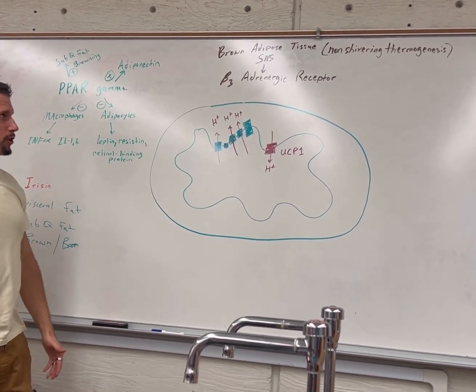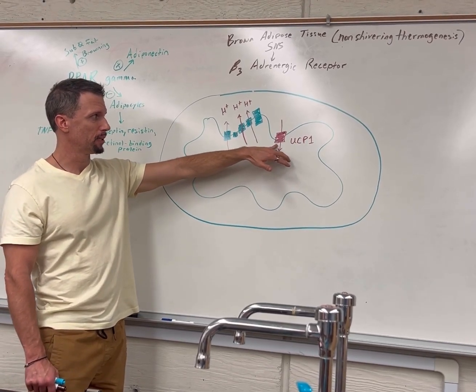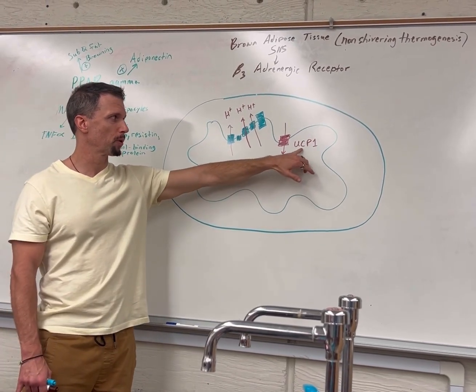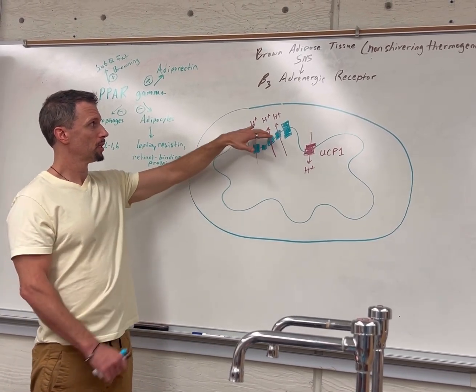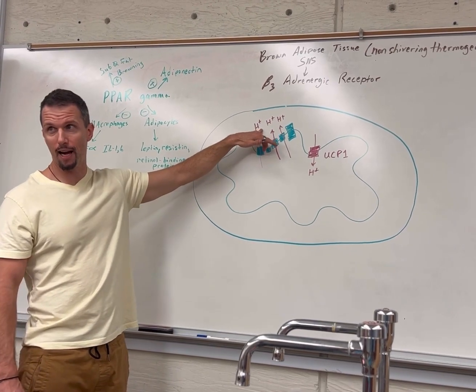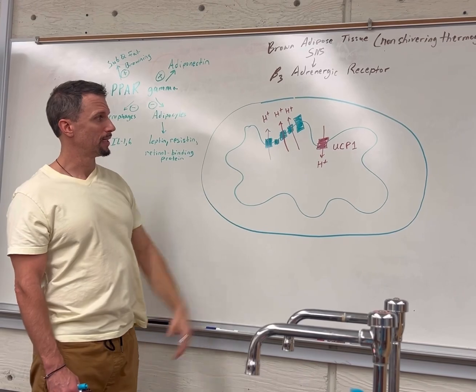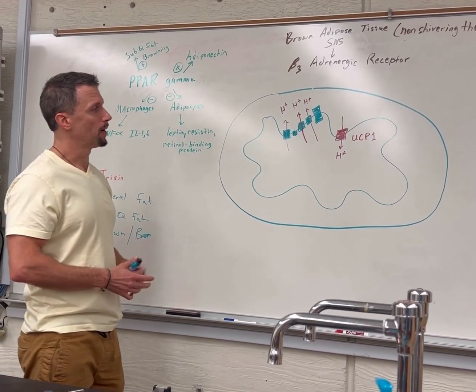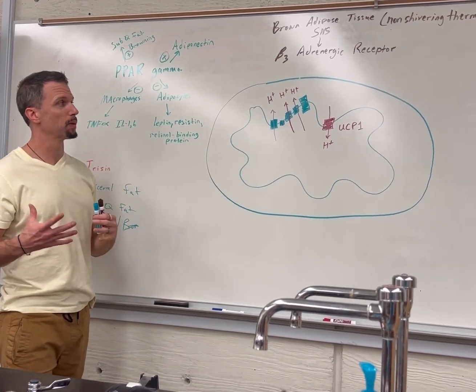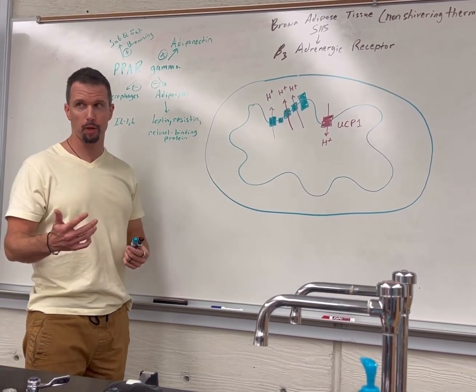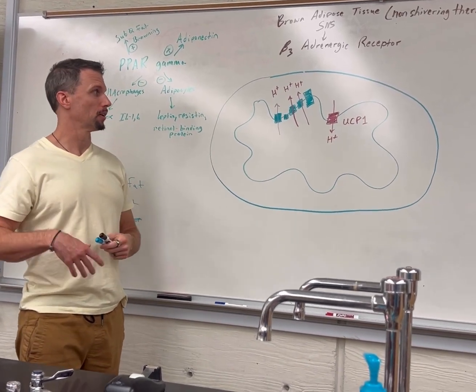Whenever you have brown fat, you have a particular protein in the inner membrane called uncoupling protein 1. It literally uncouples this potential energy, which is the hydrogen ions, from oxidative phosphorylation. It's basically like this futile cycle. Remember how we got the hydrogen ions here in the first place through cellular respiration, glycolysis, and the Krebs cycle.